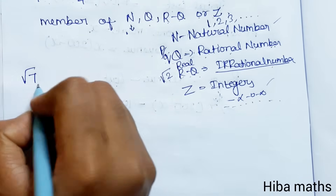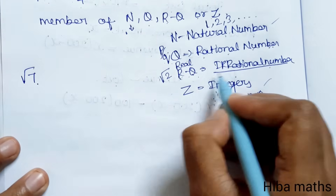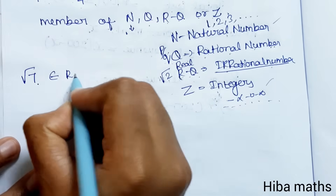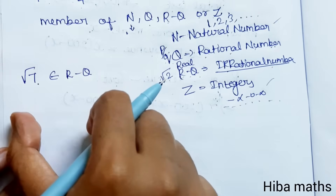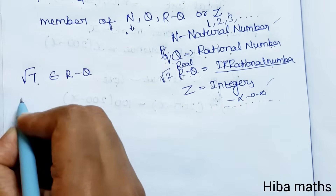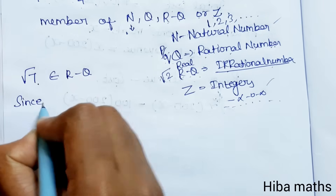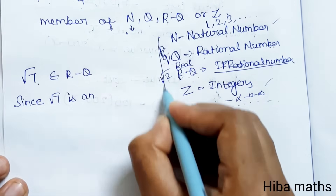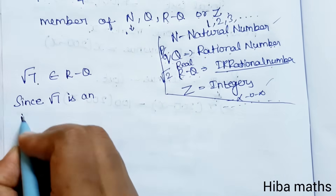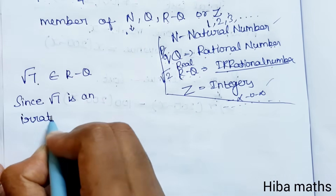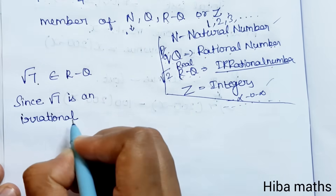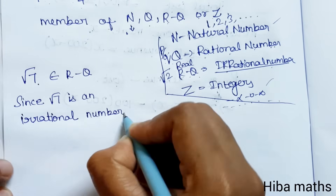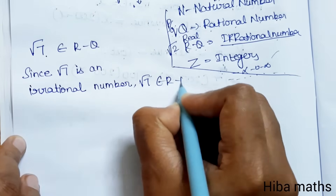First, root 7. Root 7 is an irrational number. Since root 7 is an irrational number, root 7 belongs to R minus Q.